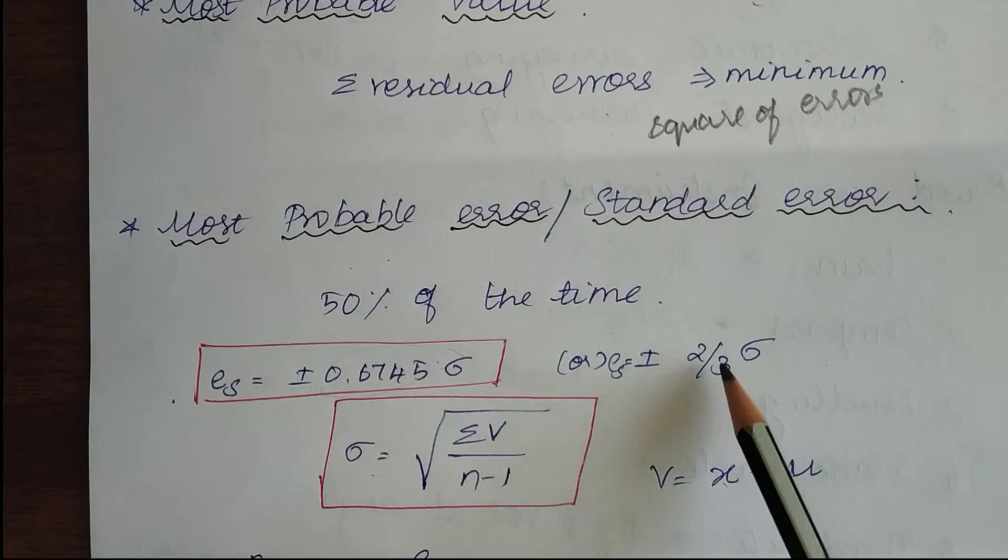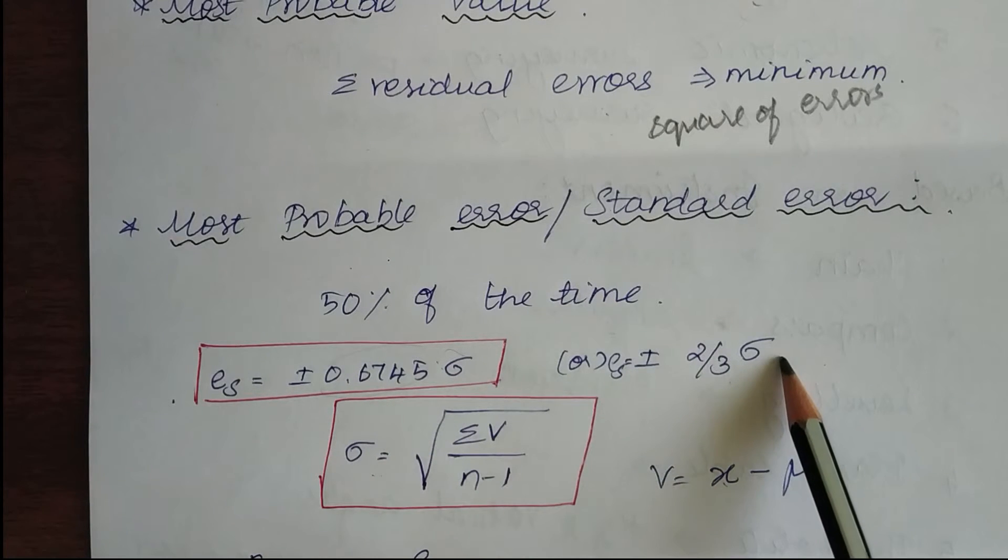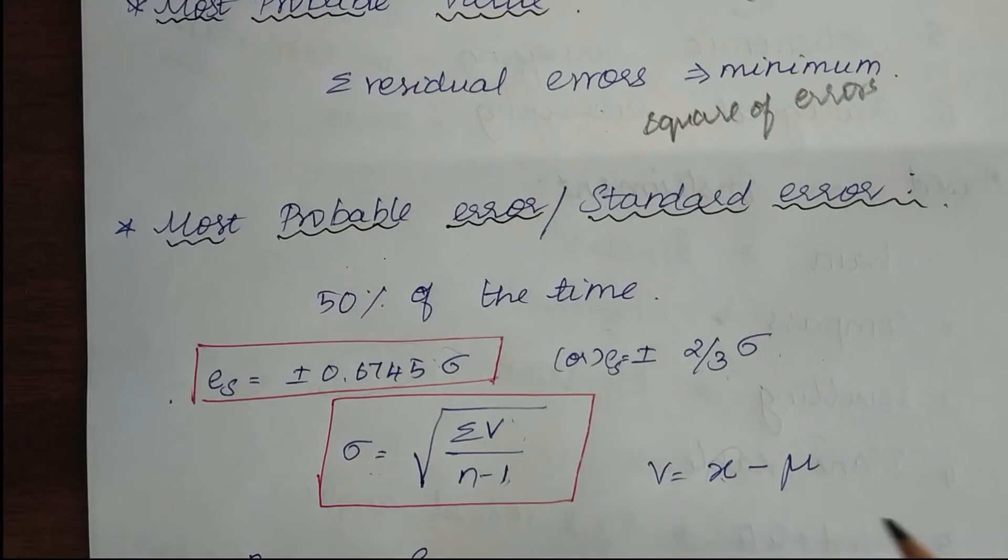If this decimal value is difficult to remember, you can use 2/3 times standard deviation, where standard deviation is the square root of summation of v divided by n minus 1, where v is a single observation minus the mean value. From this we find the standard deviation and then the probable error of a single observation.